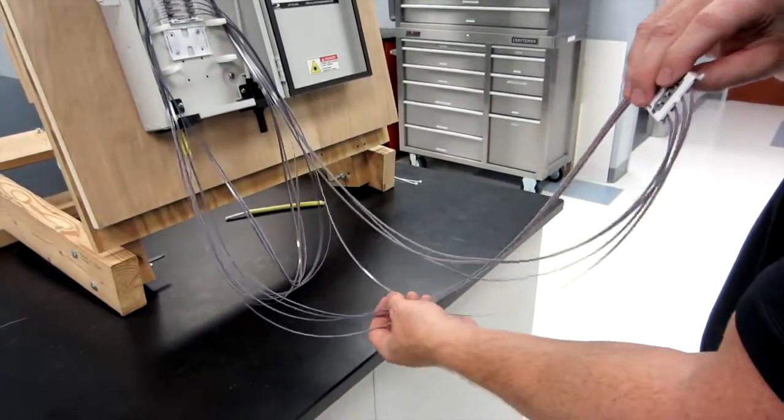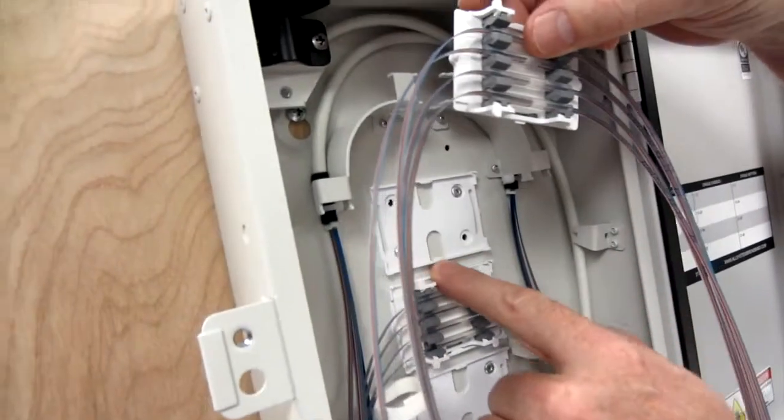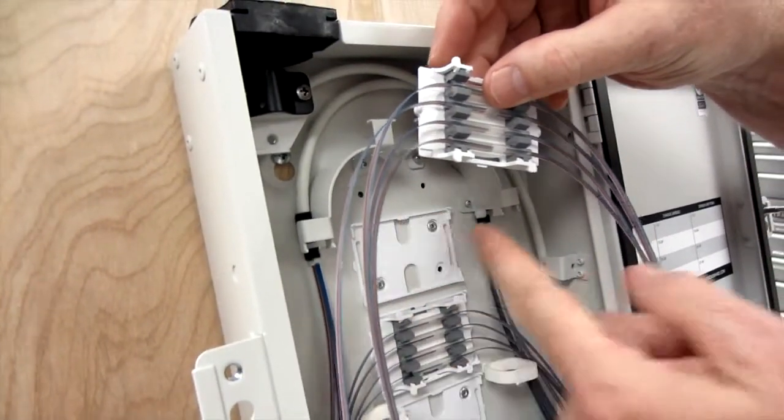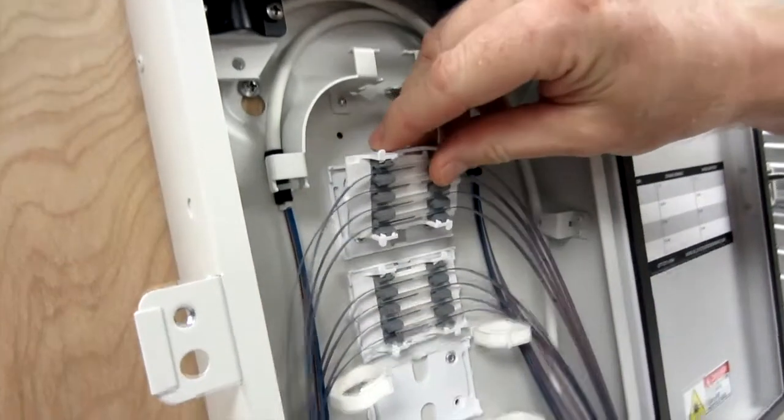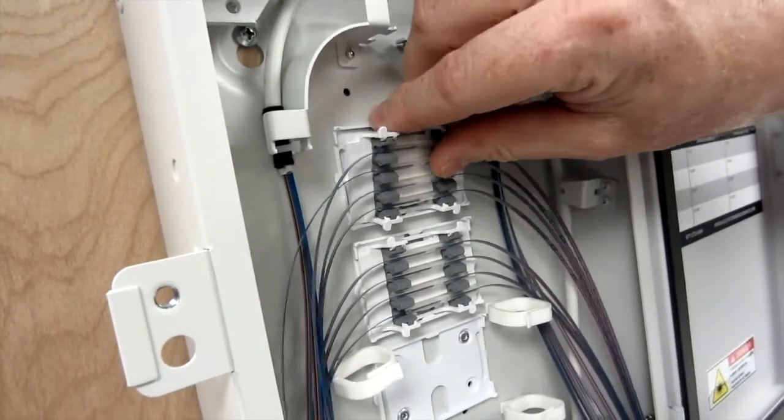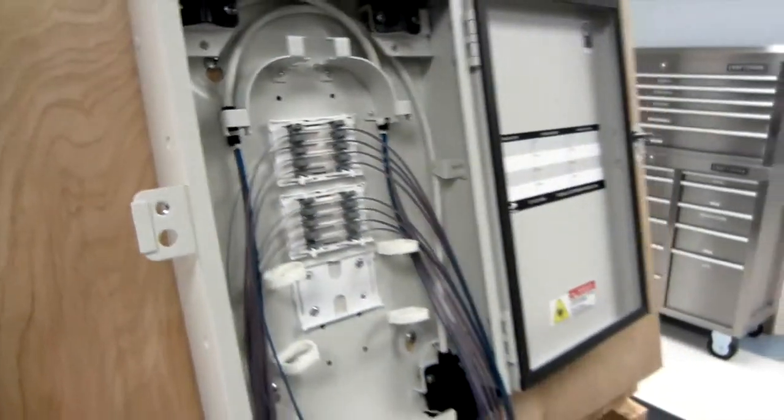Now the bottom of the cradle adapter has little clips here that are going to match up with our tabs on our cradle. So basically we just lower it into place on the bottom and on the top we're just going to click it in here and that holds our cradles in place.